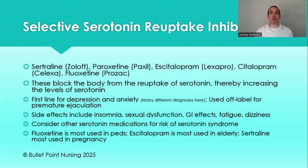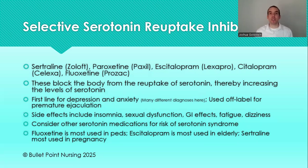Now we'll start talking about the actual drugs. The number one universally recommended first class for both depression and anxiety is the SSRIs. Depression and anxiety often go hand in hand with overlapping symptoms and diagnoses. Fortunately, both conditions are at least initially treated with the same class of drugs — the SSRIs.